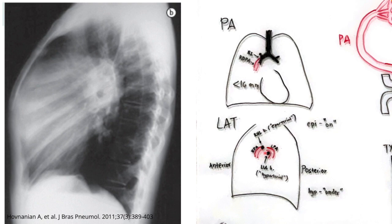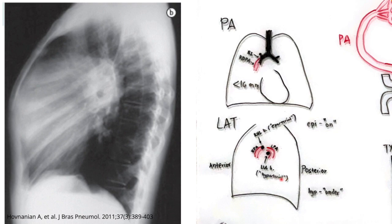On the lateral X-ray, two lucent circles represent the right and left upper lobe bronchi. On the frontal radiograph, the right upper lobe bronchus is higher than the left. The right upper lobe bronchus is eparterial — meaning it sits on or above the corresponding pulmonary artery — so this circle represents the right pulmonary artery. The left upper lobe bronchus is hypoarterial, sitting below the left pulmonary artery.